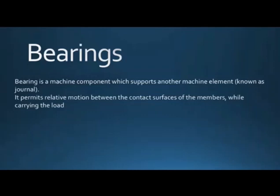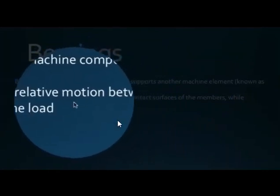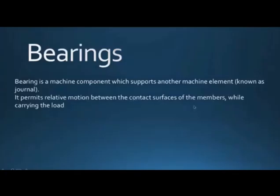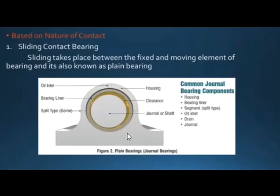A bearing is a component which supports another machine element known as a journal, and permits relative motion between them — that relative motion is the key function. It must also have the capacity to carry some load. In a sliding contact bearing, there is a small clearance between the journal (shaft) and the outer housing, and oil is poured through an oil inlet to avoid metal-to-metal contact, which would cause sound, friction, and heat generation.